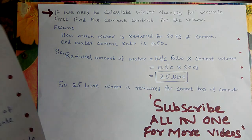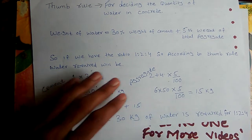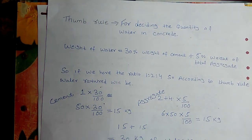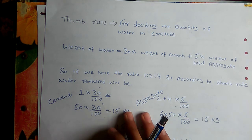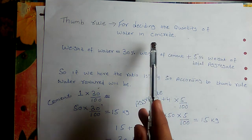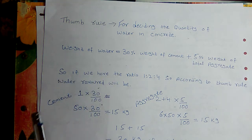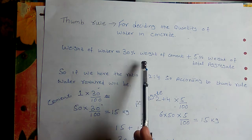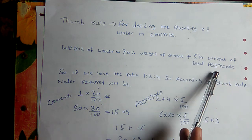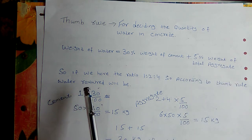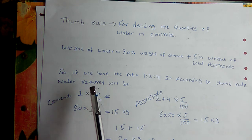We have another formula — the thumb rule — for deciding the quantity of water in concrete. According to the thumb rule, weight of water equals 30 percent of the weight of cement plus 5 percent of the weight of total aggregate.